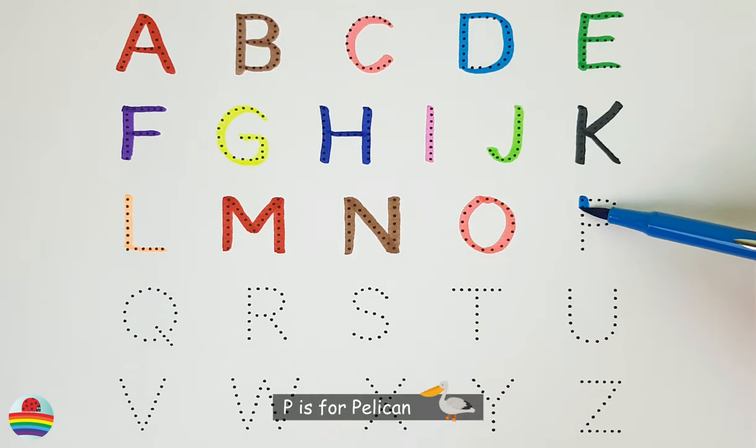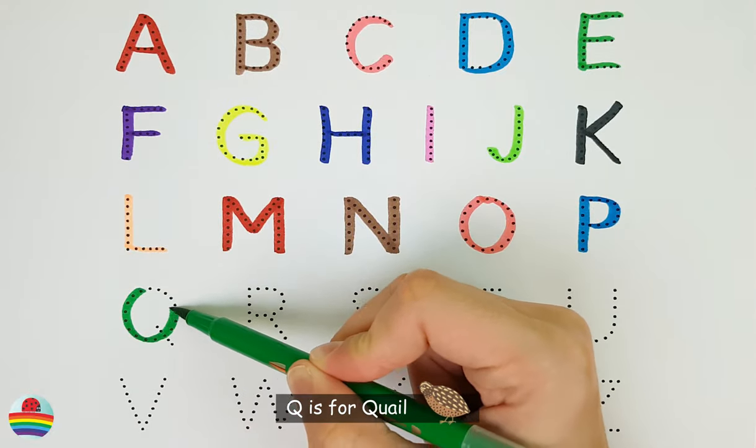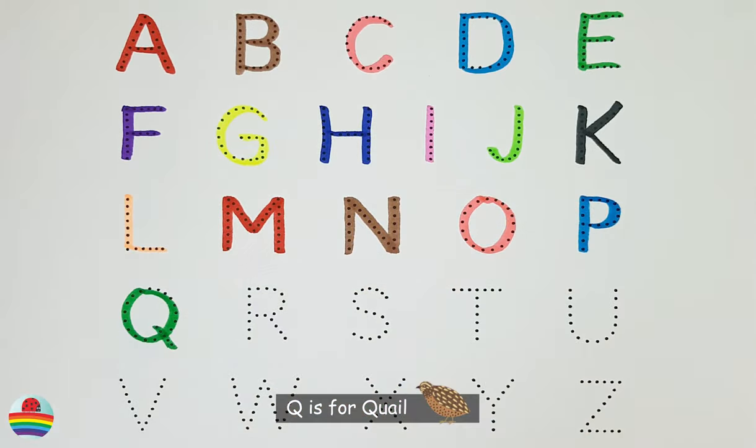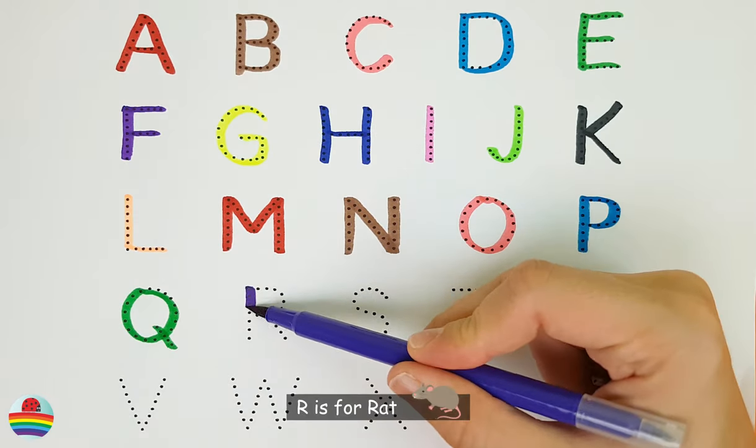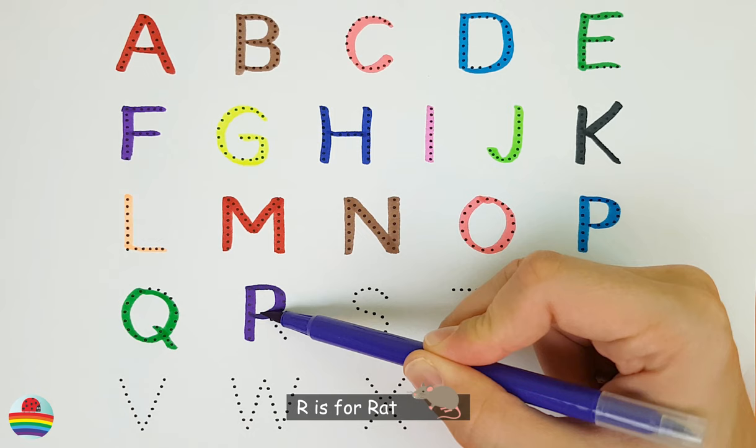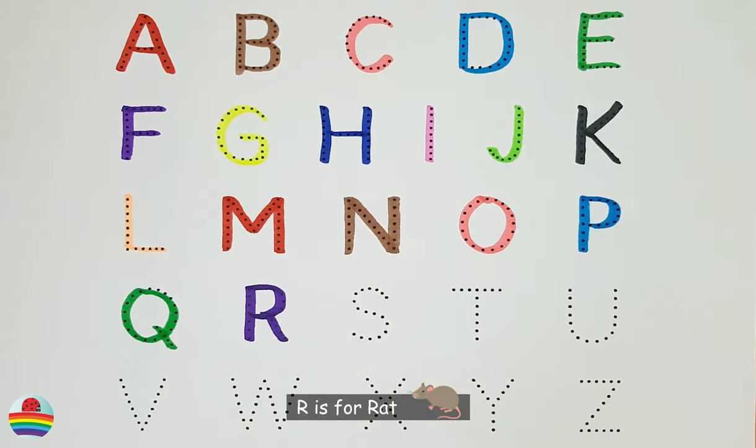P. P is for pelican. P. Q. Q is for quail. Q. R. R is for rat. R.